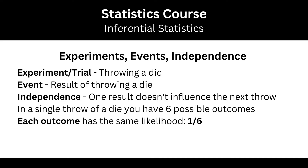Independence is one result not influencing another. The die is evenly balanced, so you got a 6, but you could also get a 1 in the next trial. Each result, if the die is evenly balanced, has the same likelihood of occurring. You have 6 faces, so it's 1 over 6.